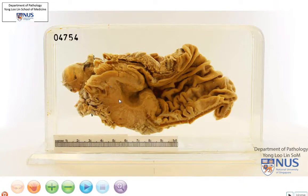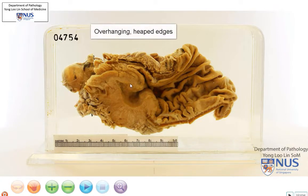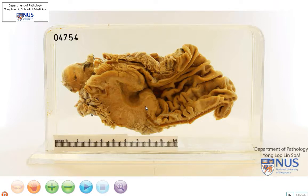The main pathology is a very fleshy, large ulcer at the antral region, and you can see that the edges are sort of hanging over the base of the ulcer. We call these overhanging edges, or heaped edges, and this is a feature that suggests a malignant ulcer, as opposed to a benign ulcer, which will have a very punched-out appearance without these overhanging edges.